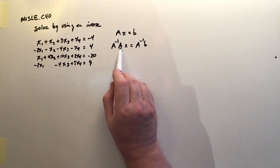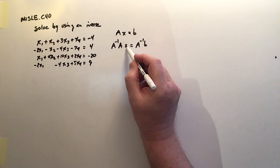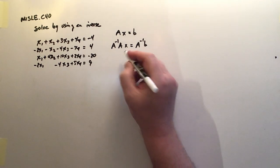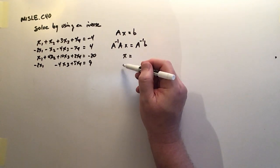Well, I know that inverse of A times A is just the identity matrix. And the identity matrix times any matrix or vector of the same dimension just returns that vector. So this left side will still be the X vector, X1, 2, 3, 4.